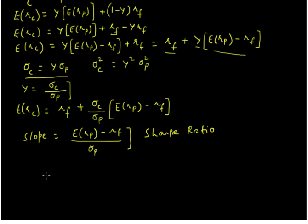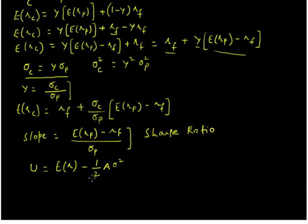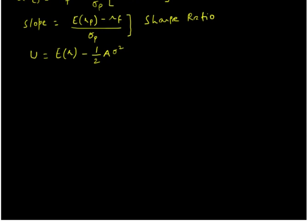Let us write down a particular investor utility function. Let U denote utility. It is going to be equal to the expected return minus one-half — which we use as an arbitrary scaling factor — multiplied by A, the coefficient of risk-aversion. The more averse you are to risk, the larger the value of A. This is then multiplied by the variance, which accounts for the risk. The issue becomes how to maximize investors' utility by choosing optimum weights for risky and risk-free assets.